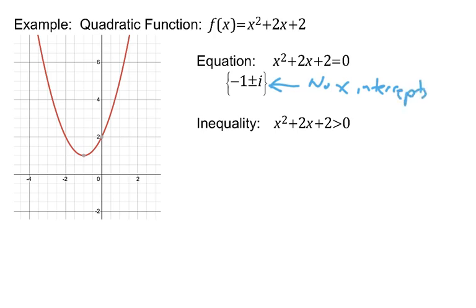If the solution of the equation involves an i, that means the graph has no x-intercepts. So there are no real solutions, there are no x-intercepts. What about the inequality?